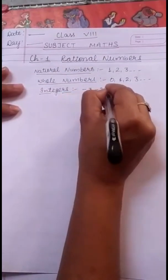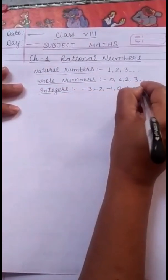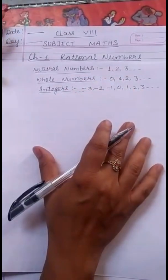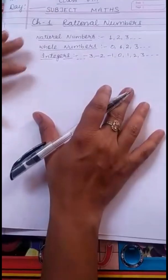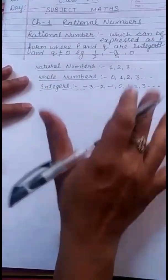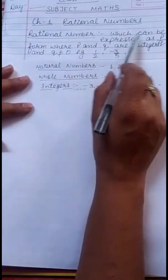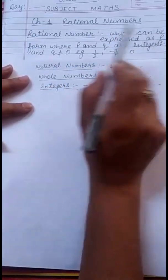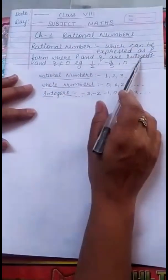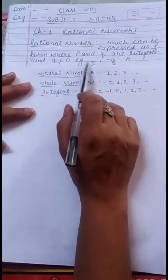For example: minus 3, minus 2, minus 1, 0, 1, 2, 3, and so on — all are integers. Now, rational numbers are also considered as fractions as you already have done. Rational numbers can be expressed in P by Q form, where P and Q are integers and Q is not equal to 0.